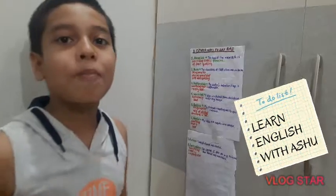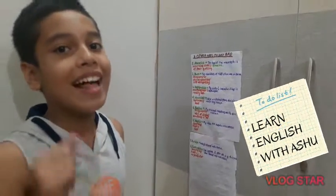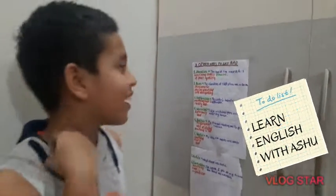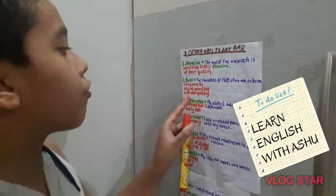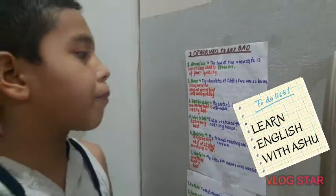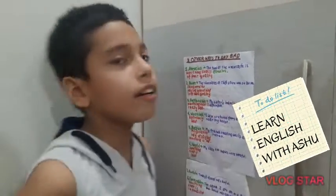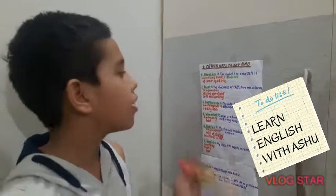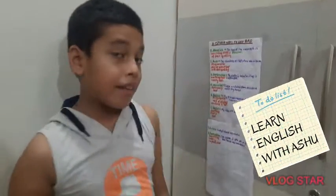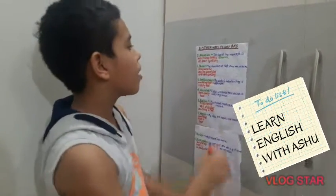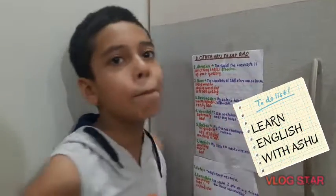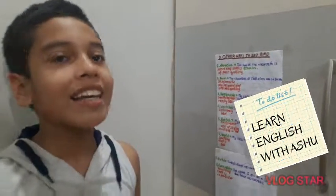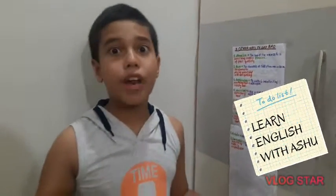Our next word is 'BAM'. It's not that body part on which we sit — it's a word. The meaning of BAM is saying something is of bad quality. It's a slang word. We can make sentences like: 'Those chocolates at the store were so BAM,' meaning the quality was very bad.